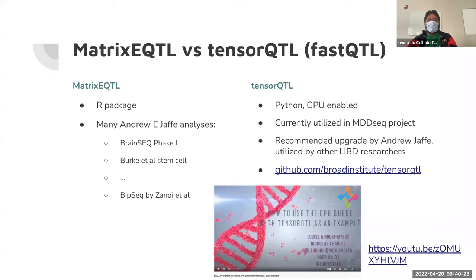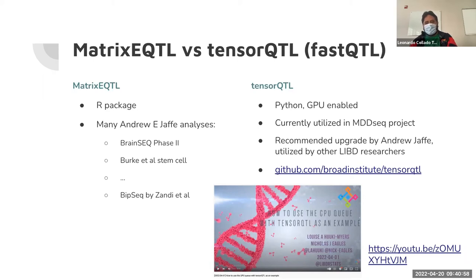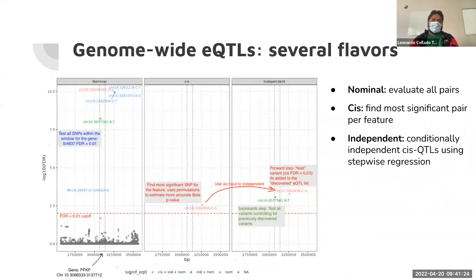TensorQTL is Python-based, and Luis has the skills to write Python code. We're using it on the MDC project. Nick and Luis figured out how to run it at JHPCE using GPUs, and they did an R club presentation on how to do this. There are different flavors of eQTLs: the nominal results, where you evaluate all SNPs with all genes in a specific window; the SIS analysis, which tries to give you the best SNP in that window; and the independent analysis, which looks for conditionally independent SNPs also of interest. As you go down the list they become more computationally demanding.